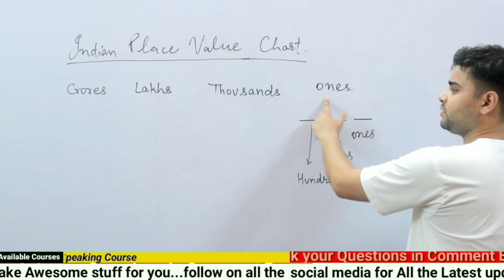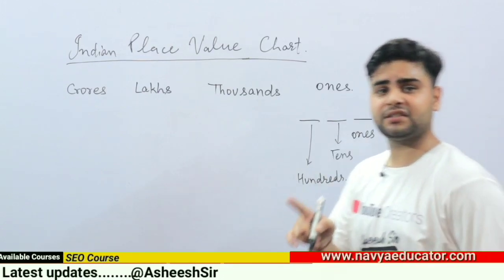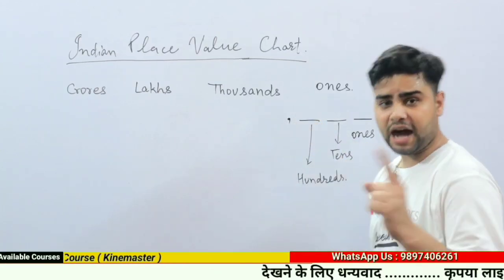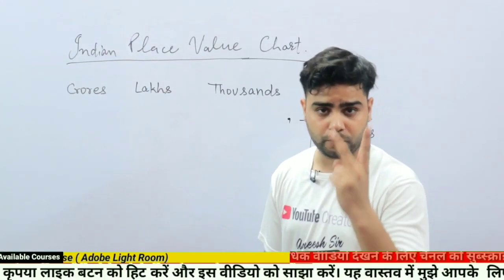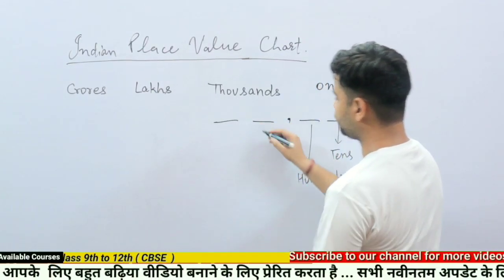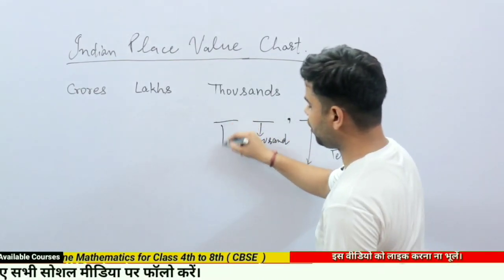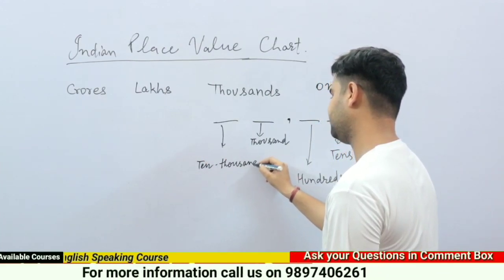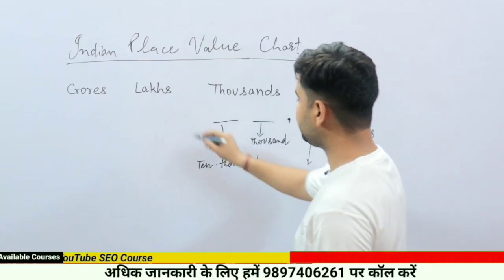After the Ones period, in the Indian place value chart we place a comma, and then we write the parts of Thousands. Thousands has two parts: the first part is called Thousands, and the second part is called Ten Thousands. After Thousands, we mark a comma.